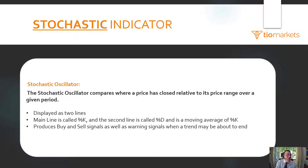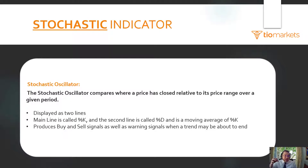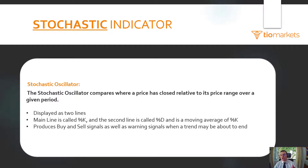It's displayed as two lines: there's a main line called Percentage K and a second line called Percentage D. Percentage D is a moving average of Percentage K. It does produce buy and sell signals, as well as warnings that a trend may be about to end — helping us identify not only buy and sell signals but also when a trend is stalling, about to reverse, or a new trend is about to begin.